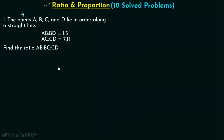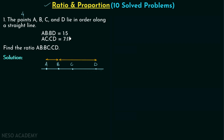Let's move on to the solution. As per the problem, we have four points A, B, C, D on a straight line in the same order. AB ratio BD is equal to 1:5, so this length will be 1 and this length will be 5. Similarly, AC ratio CD is equal to 7:11, so this length will be 7 and this length will be 11. In the first ratio there is no common factor, so we assume the common factor is x, giving us 1x and 5x.